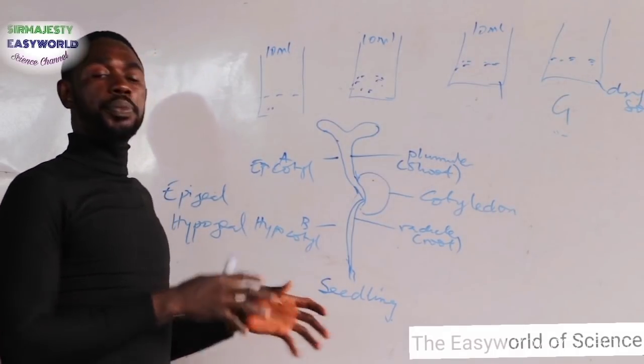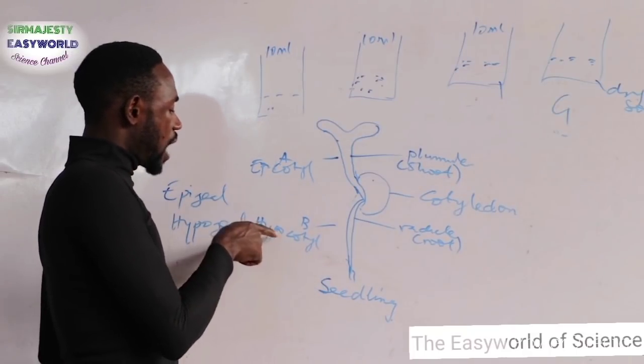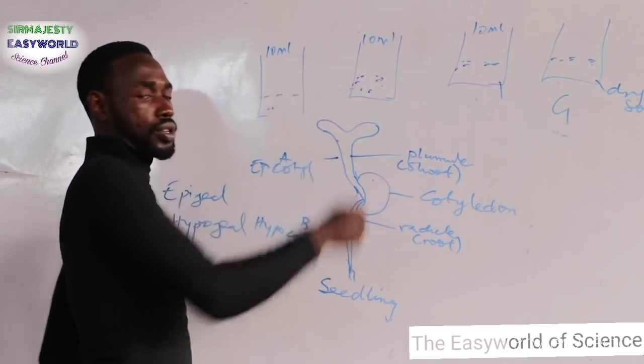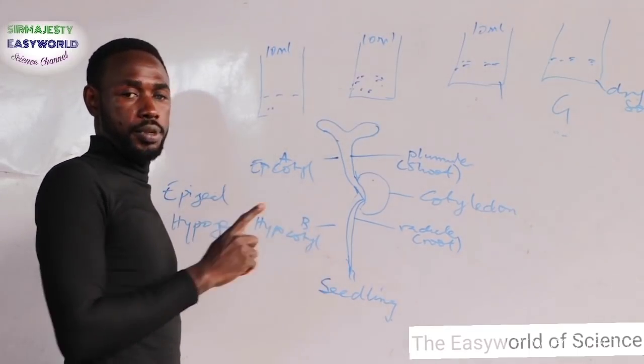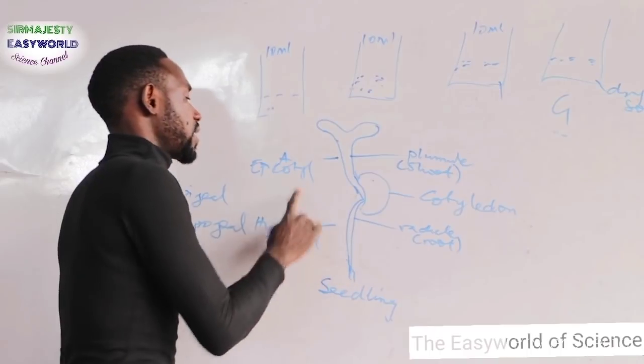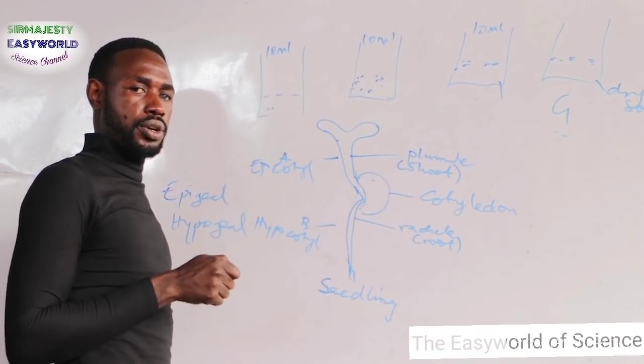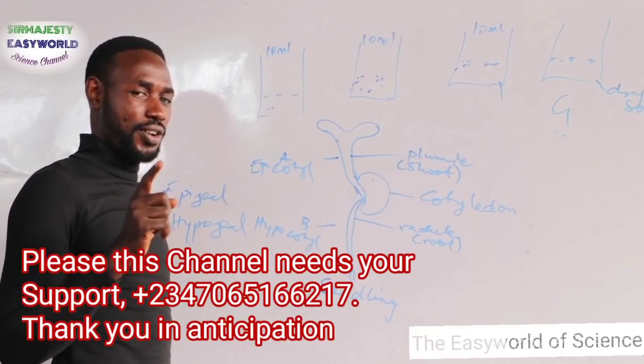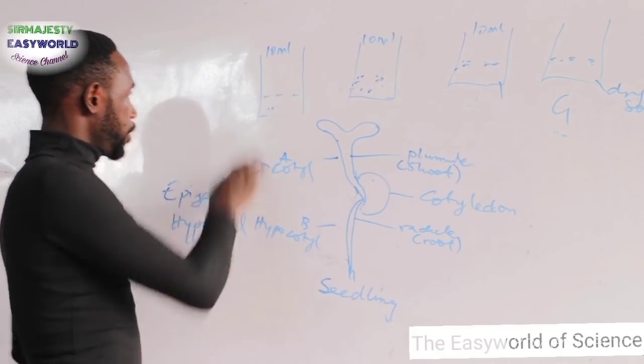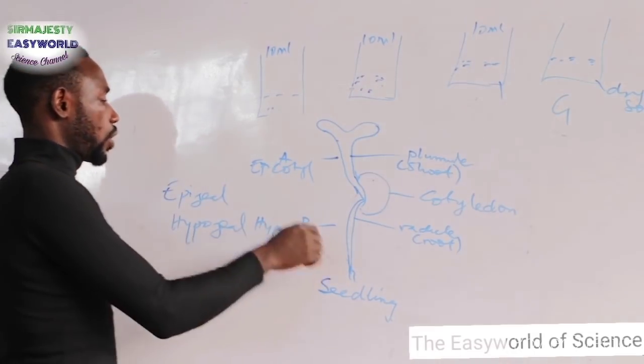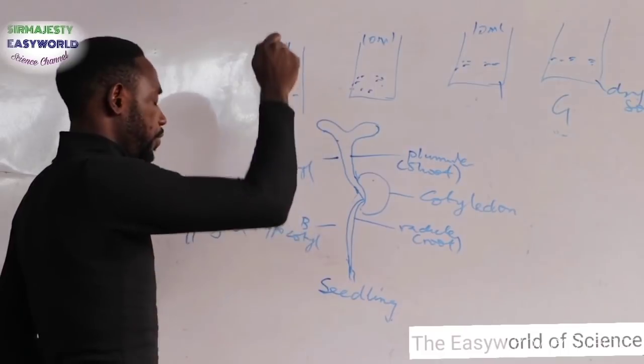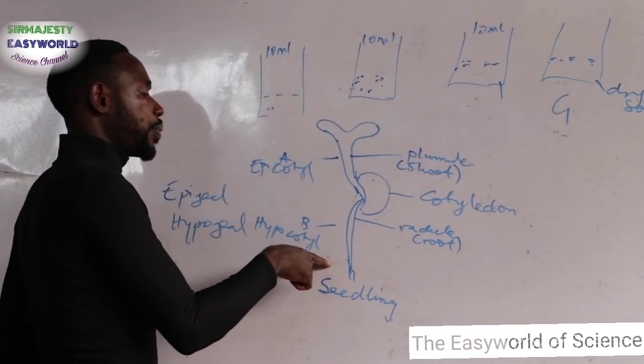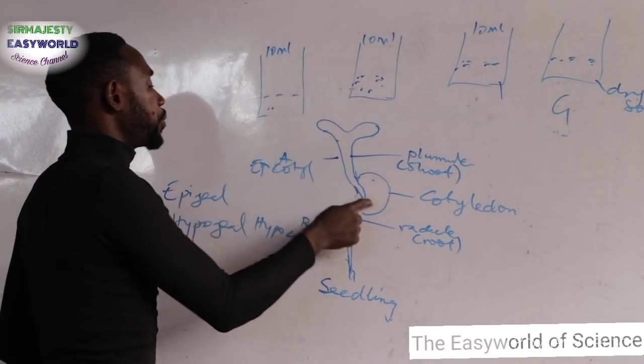I want to describe the mechanism of epigeal germination. If the hypocotyl grows faster than the epicotyl, it means that it's going to push this cotyledon out of the soil, and that type of germination is called epigeal germination. In epigeal germination, the hypocotyl grows faster than epicotyl, thereby pushing the cotyledon above the soil.